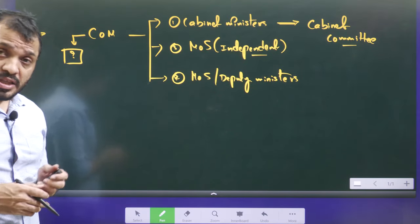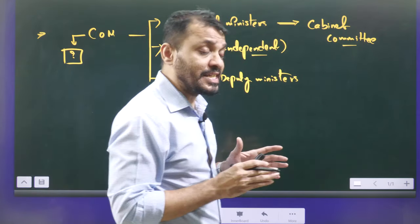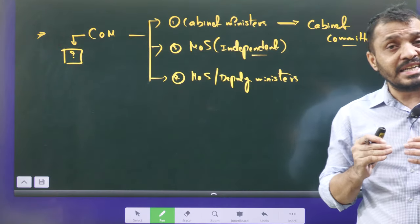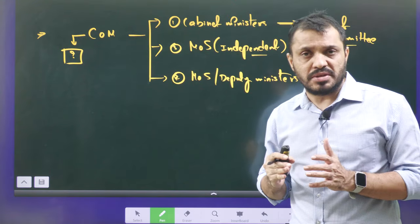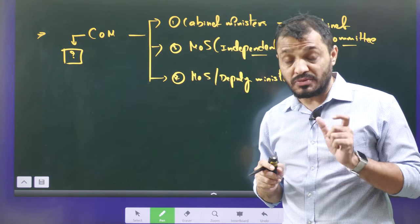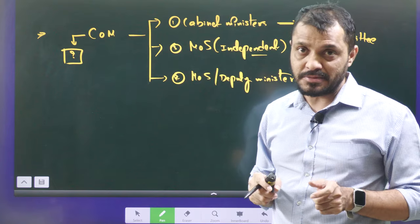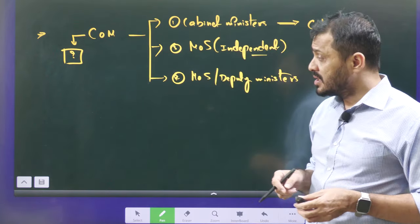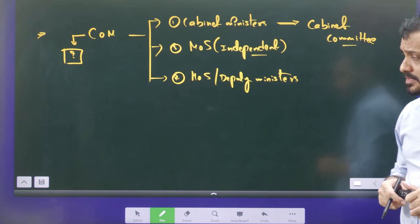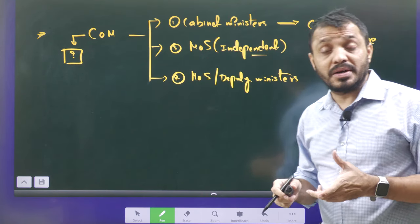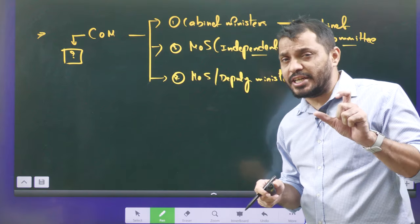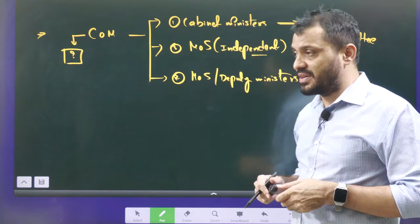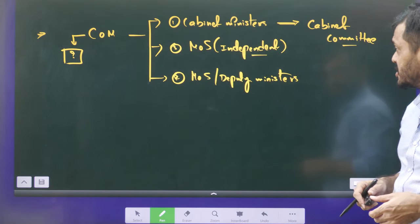In the original constitution, the word 'cabinet' itself was not there. It was added later through the 44th Constitutional Amendment Act, 1978. In the entire Indian constitution, in which article will you find the word 'cabinet'? Put your answer in the comment section.